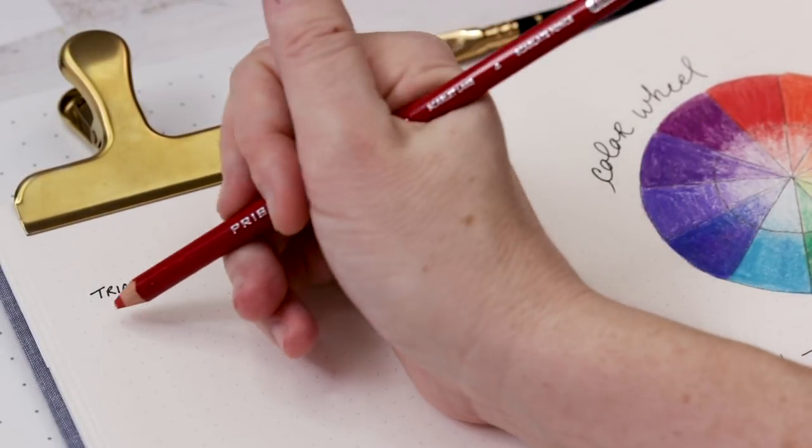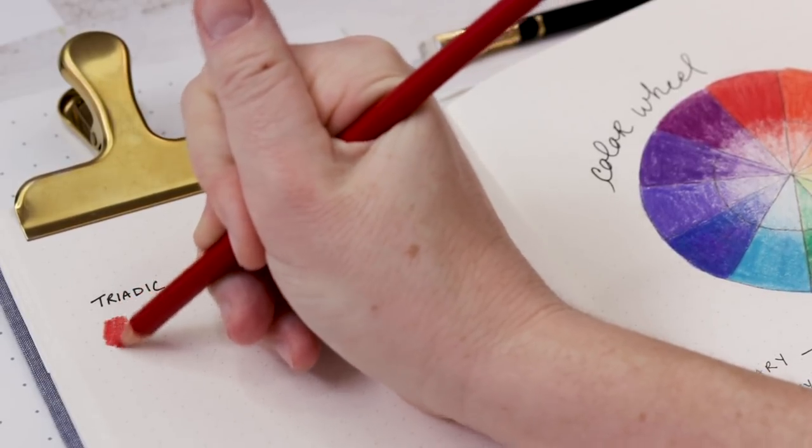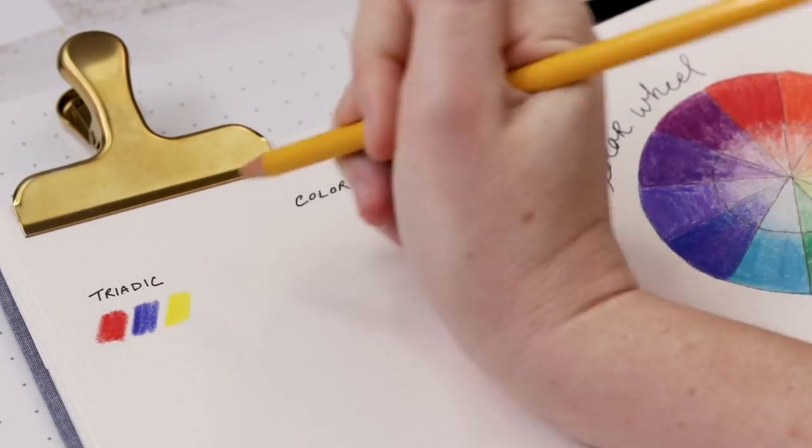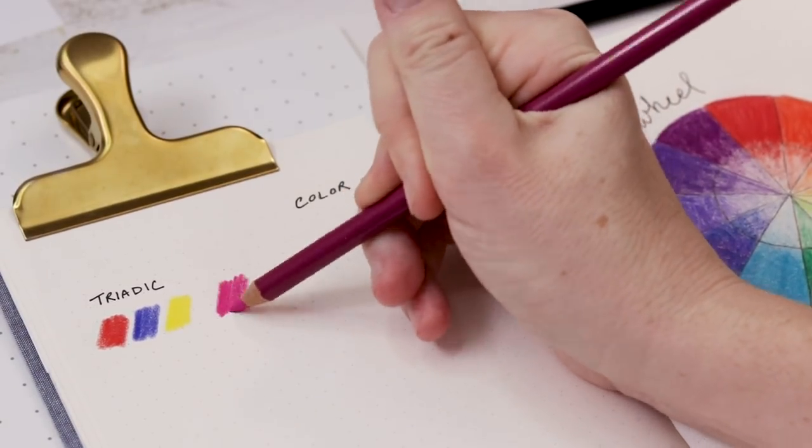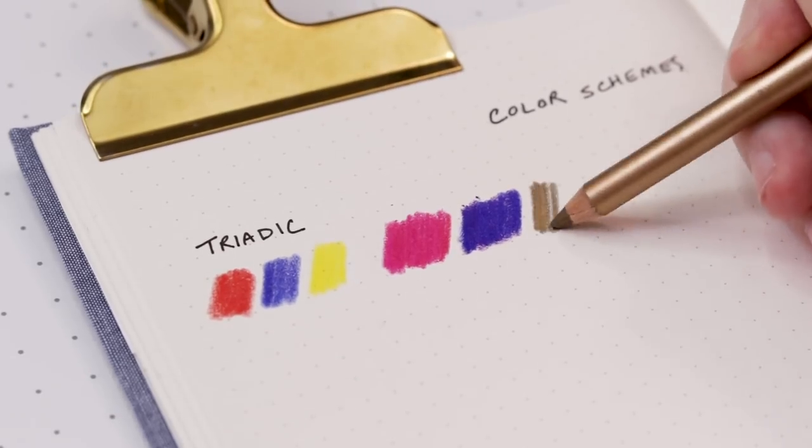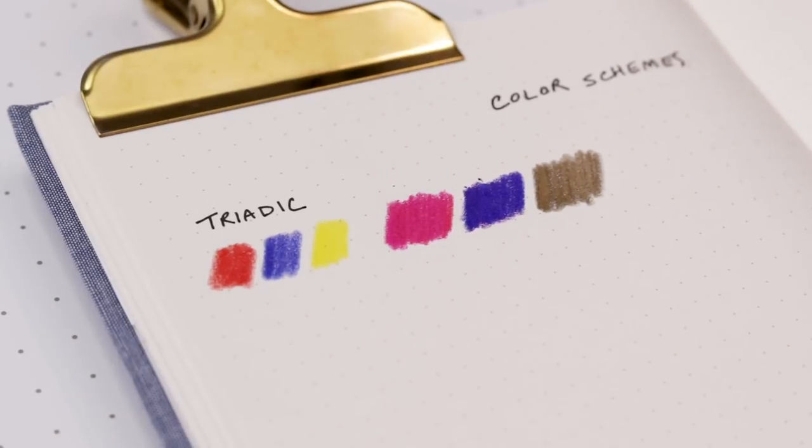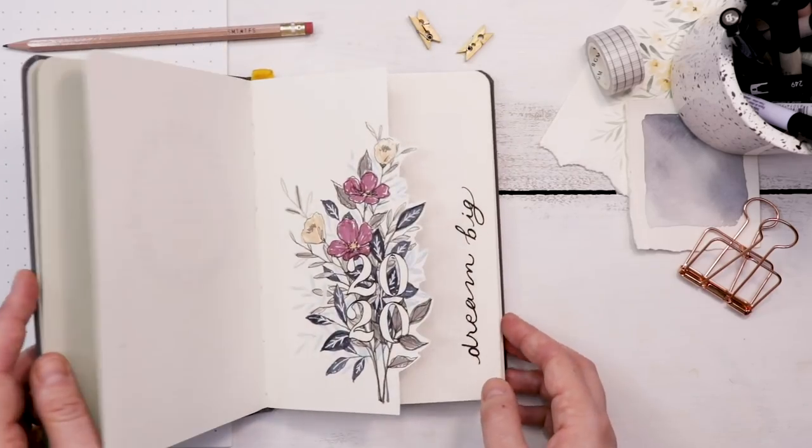As a budding artist, it's also super helpful to understand the color wheel and color schemes. The first scheme we're going to talk about is a triadic scheme, and this scheme is made up of three colors that are equidistant on the wheel. An obvious example is the primary or secondary colors. What I'm doing in my journal here is a primary triadic scheme, but then I've modified it and used magenta, royal blue, and gold. My 2020 bullet journal cover page is actually an example of a triadic scheme made up of those modified primary colors.